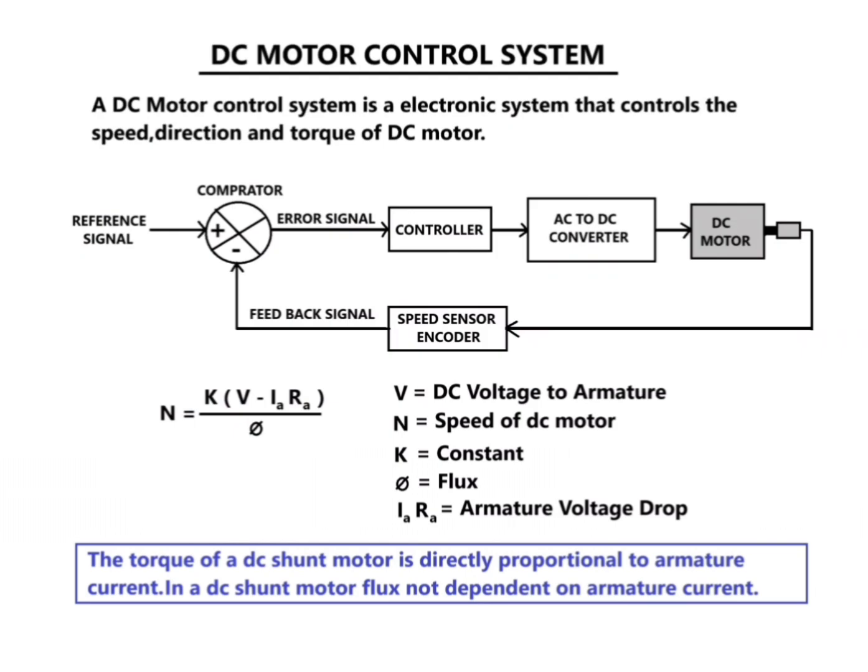Hello. A DC motor control system is an electronic system that controls the speed, direction, and torque of a DC motor.